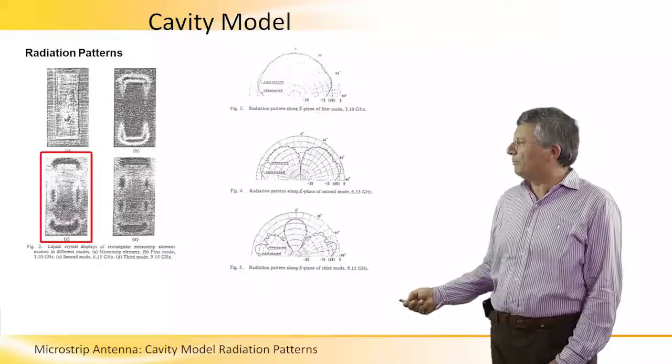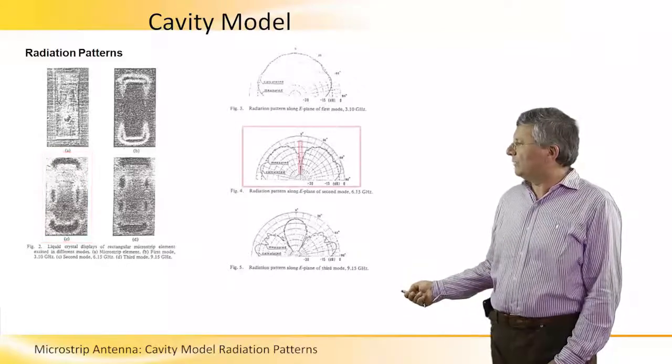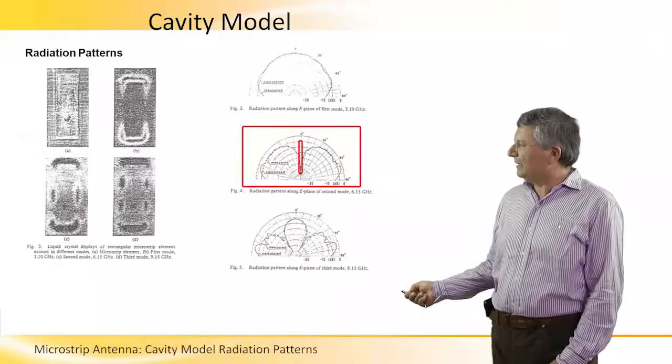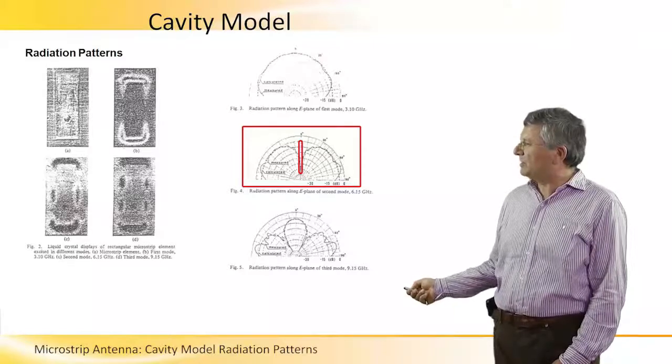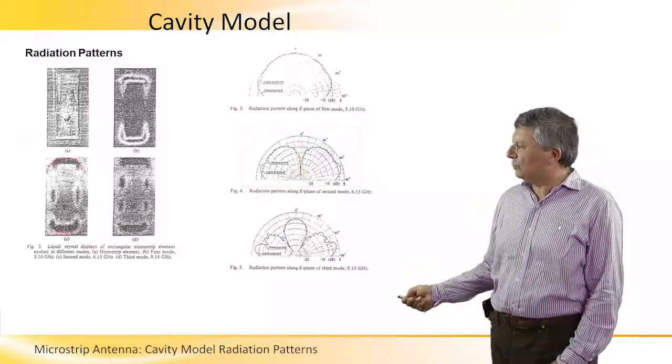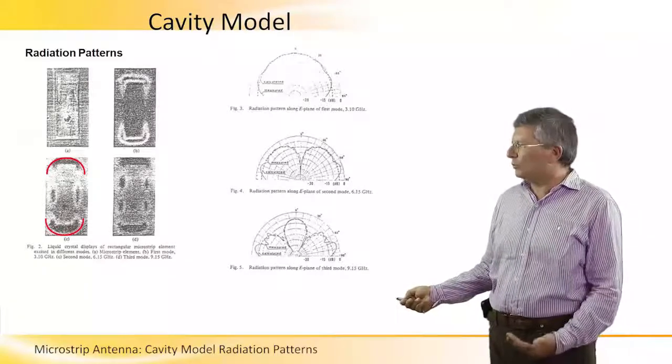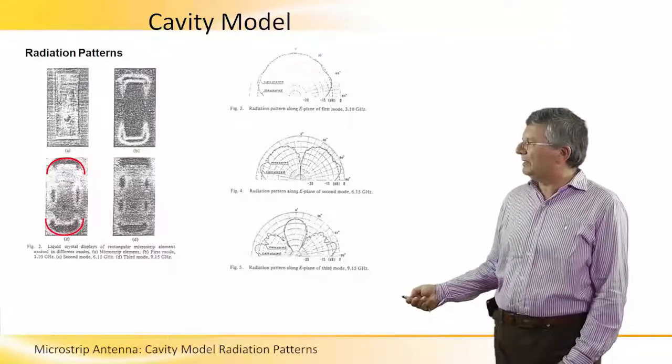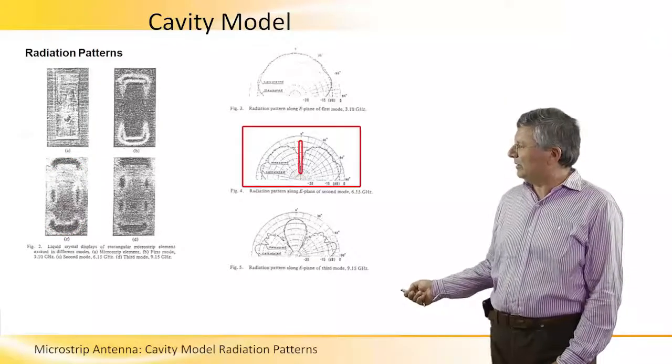While for this mode, we obtain a null in the direction on the axis normal to the patch. This is due to the fact that those two radiating slots don't combine in phase, but are reversed in phase, and therefore we obtain a null normal to the plane of the microstrip.